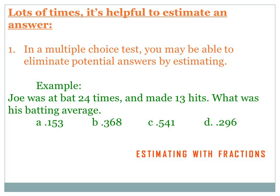Let's say you've got a problem about a batting average. Joe was at bat 24 times and made 13 hits. What was his batting average? The choices are .153, .368, .541, or .296. Well, unless you've got a calculator, that's a little hard to calculate. You know it's 13 divided by 24, but that's a little hard to do in your head. So if you just had to guess, you'd have a 1 in 4 chance, or a 25% chance of guessing correctly.